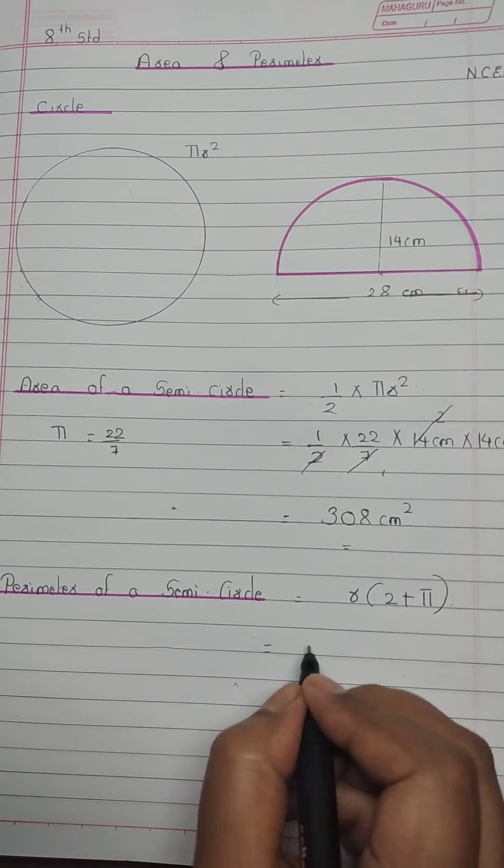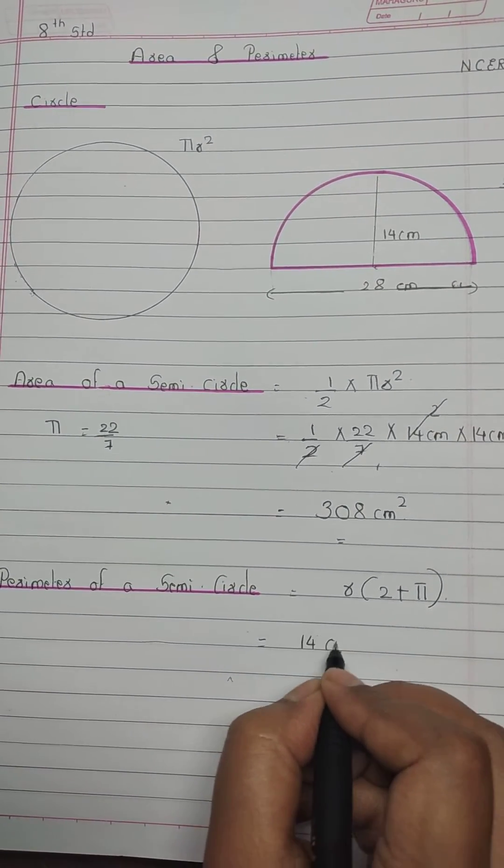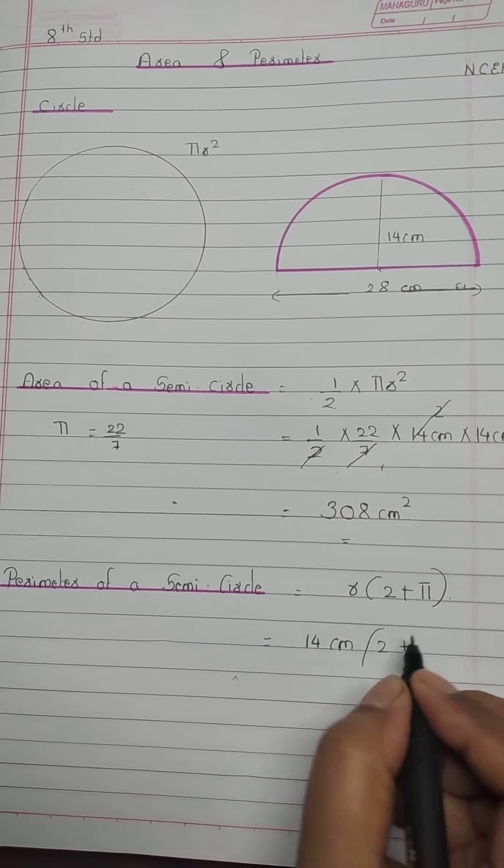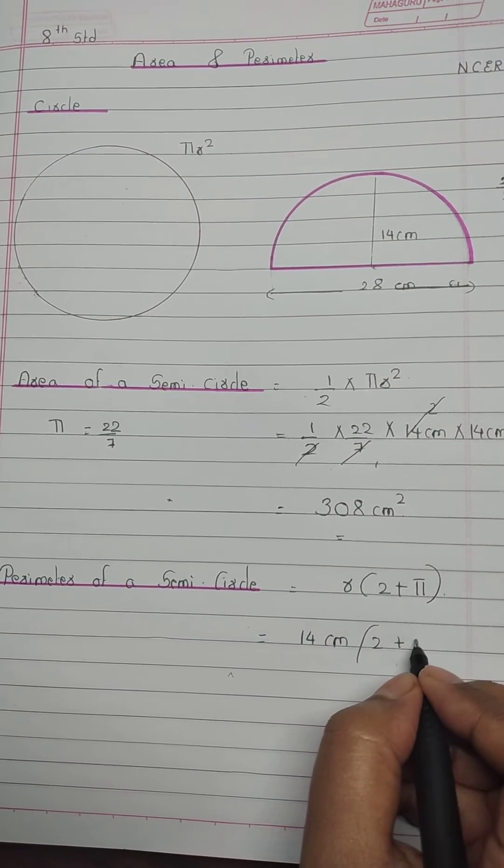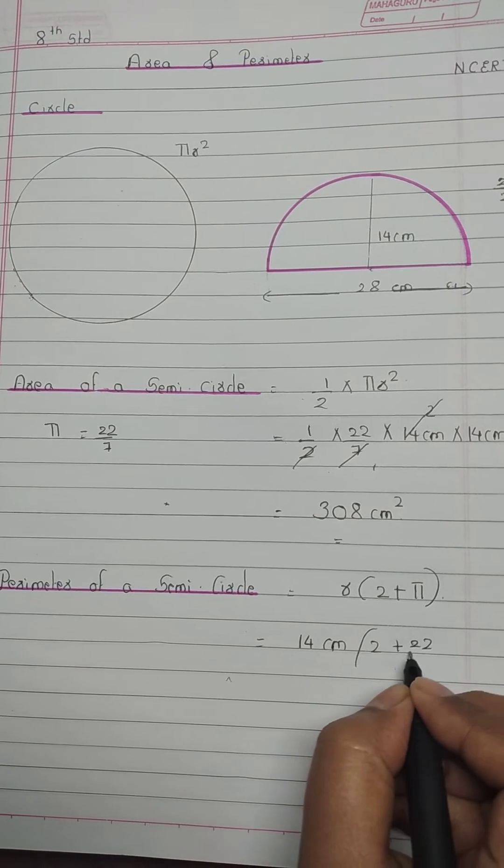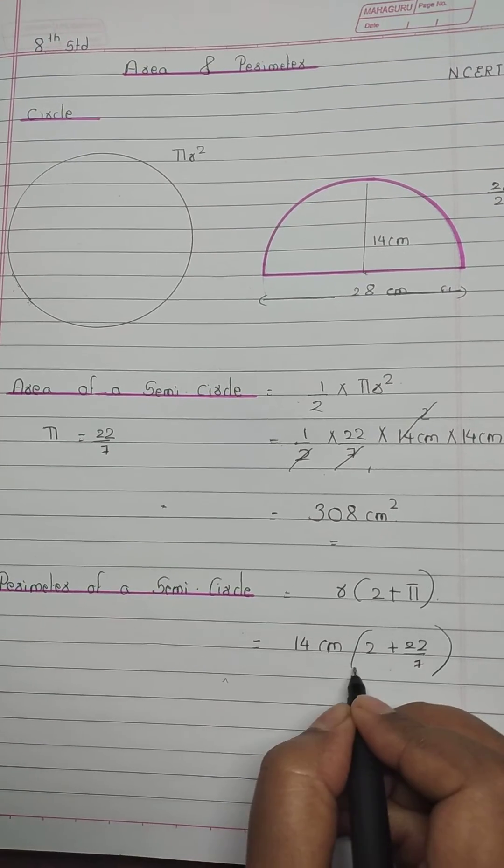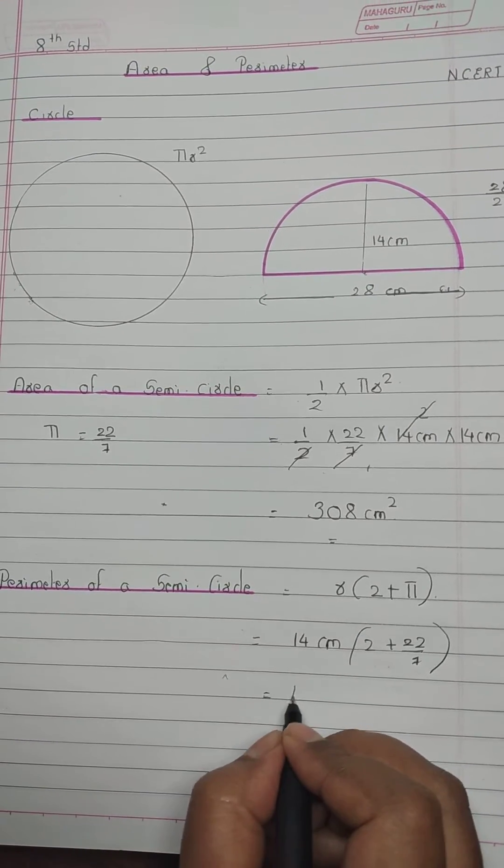Radius is 14 cm, then 2. Pi value we have taken as 22 upon 7. First, we will solve the bracket.